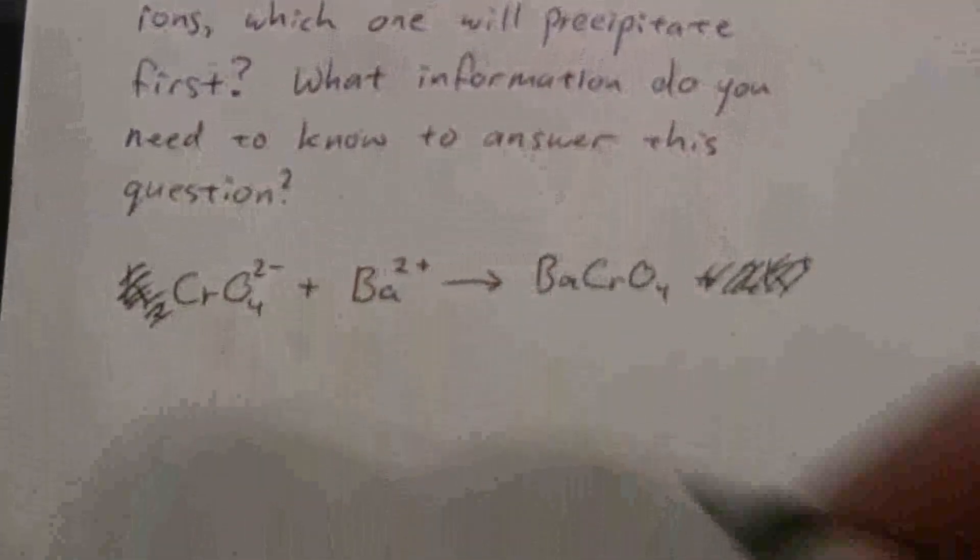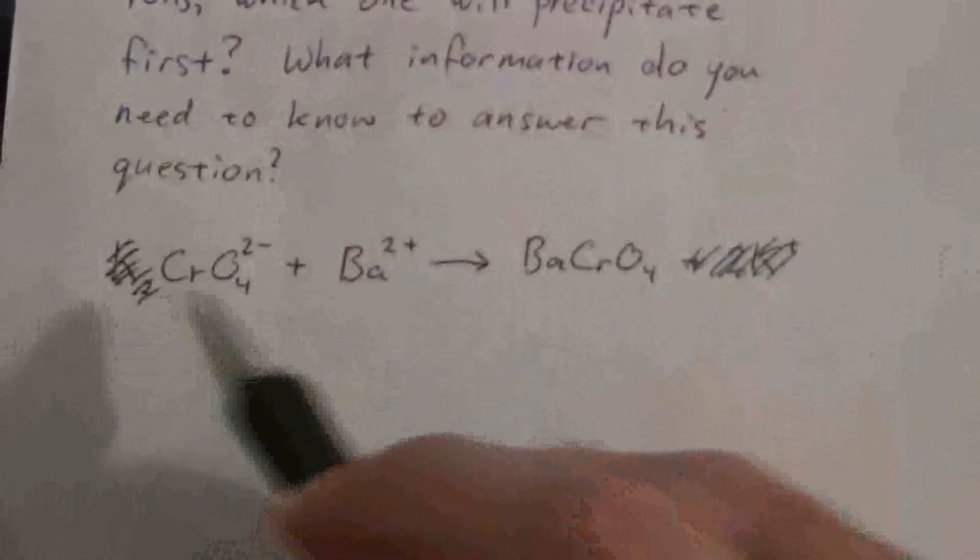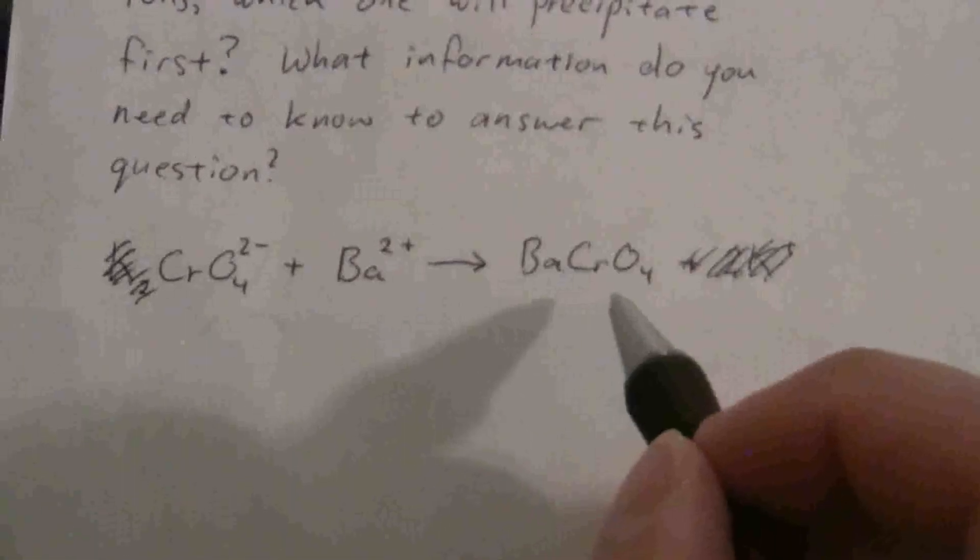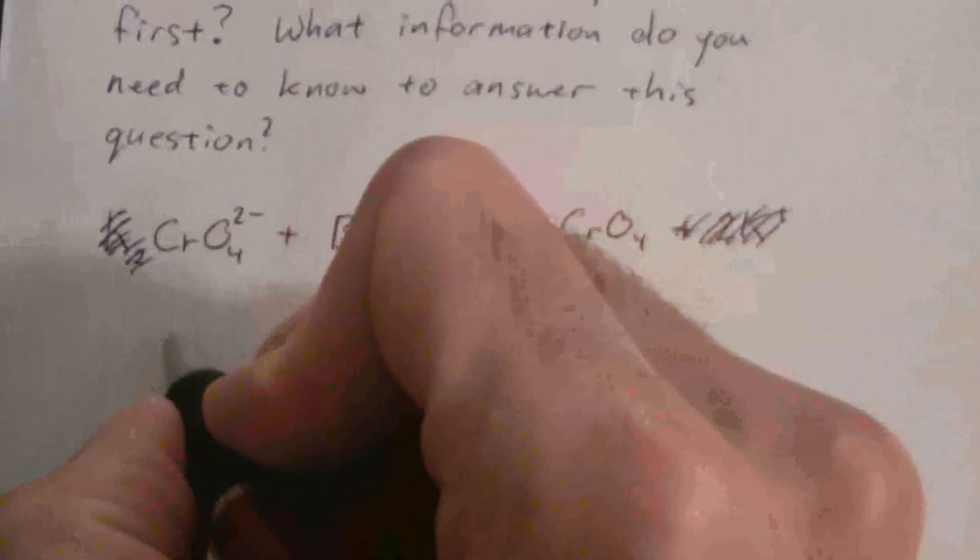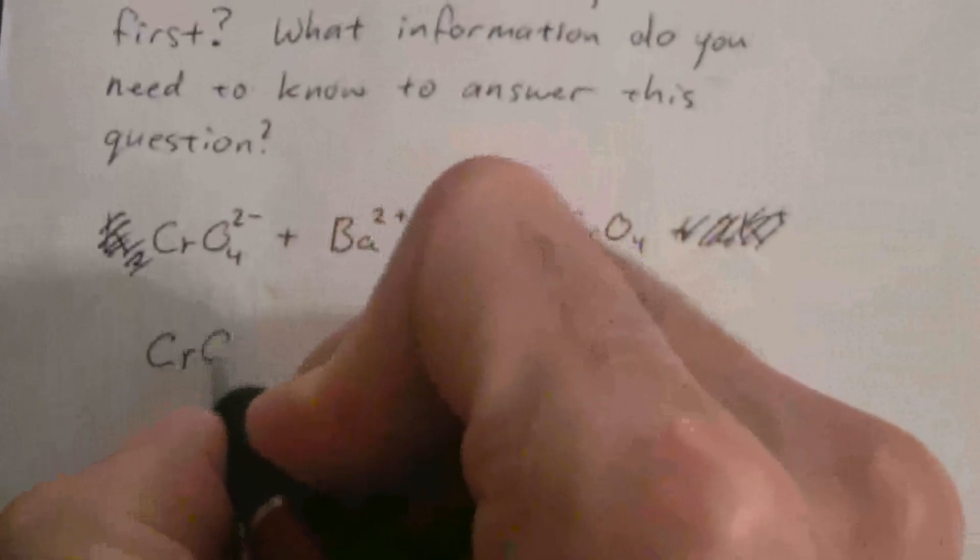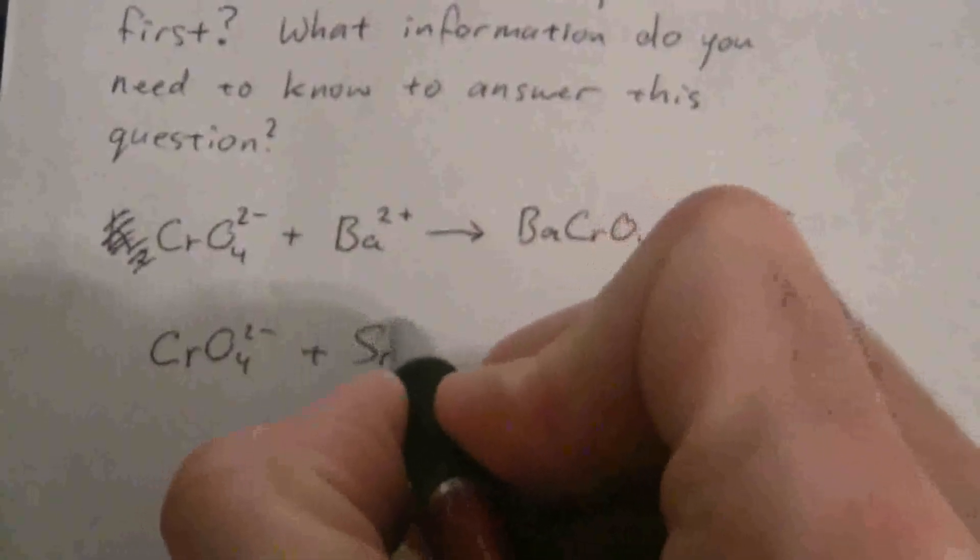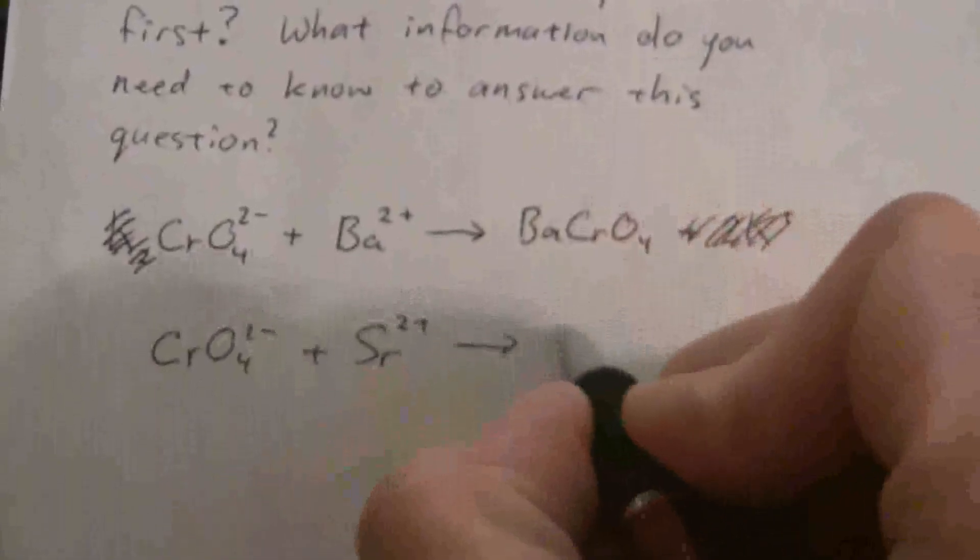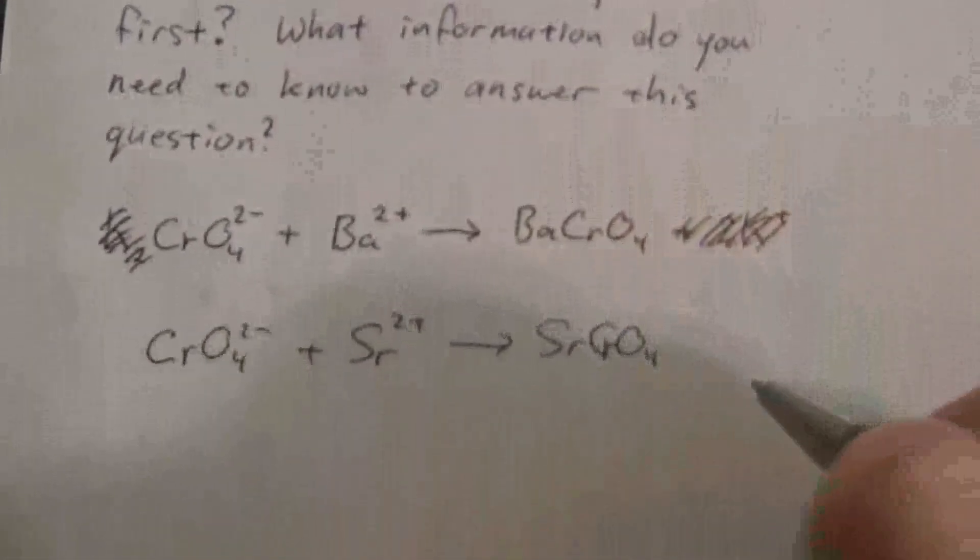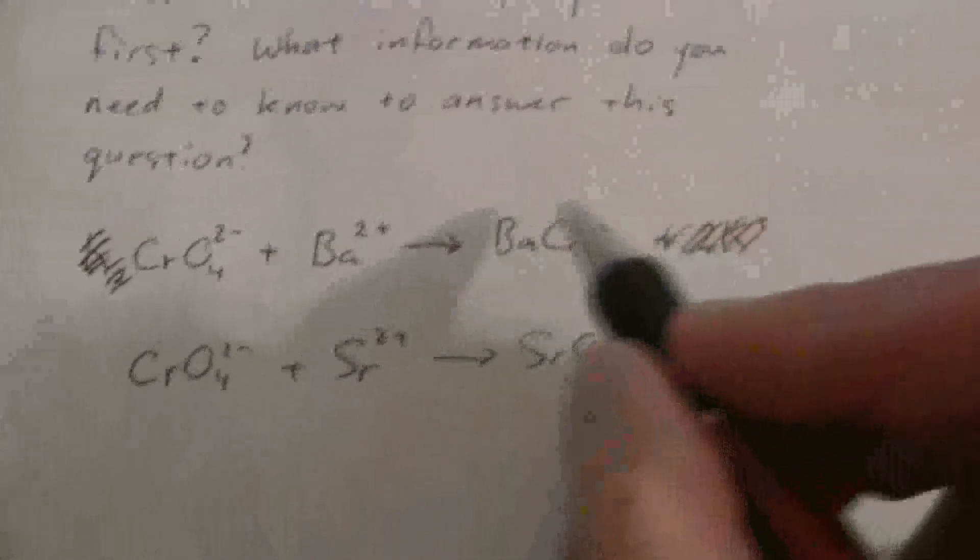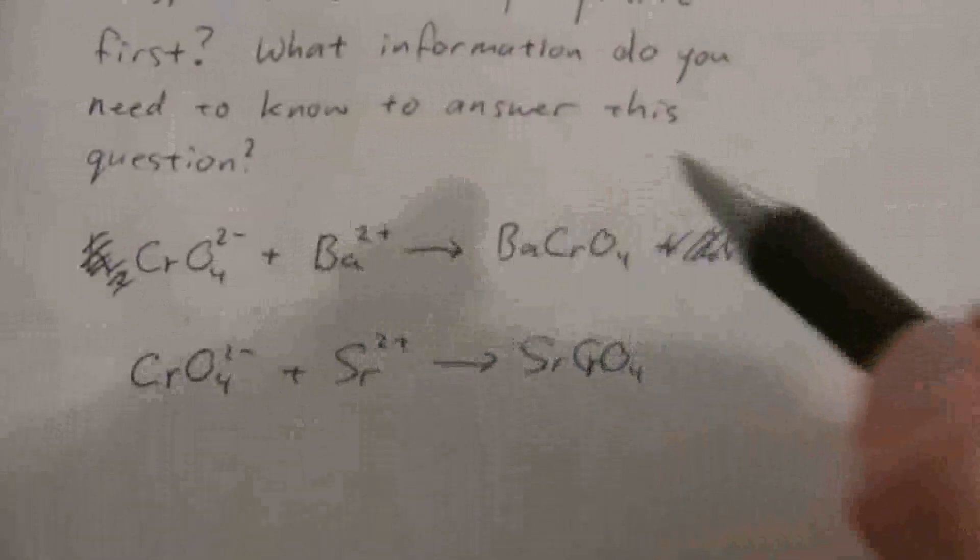So I'll just go ahead and leave it like this. This is the net ionic equation for the reaction with the barium ion, and then we have a similar reaction with the strontium ion. So the question is which one is going to precipitate first?